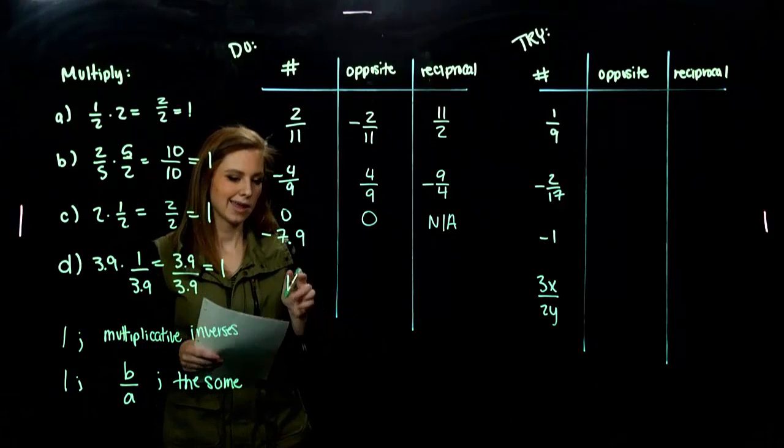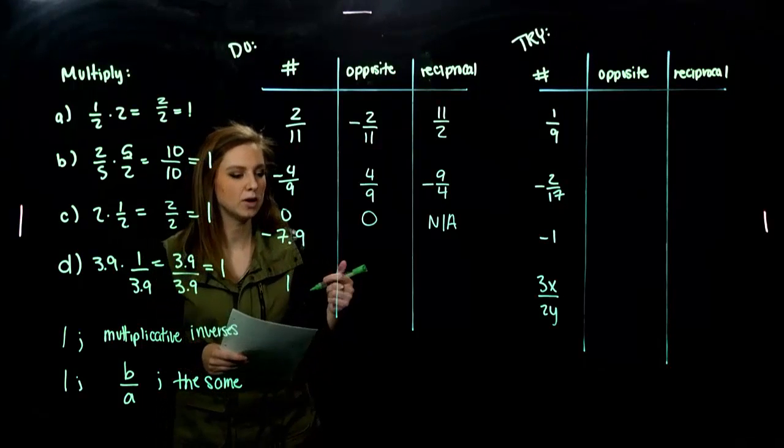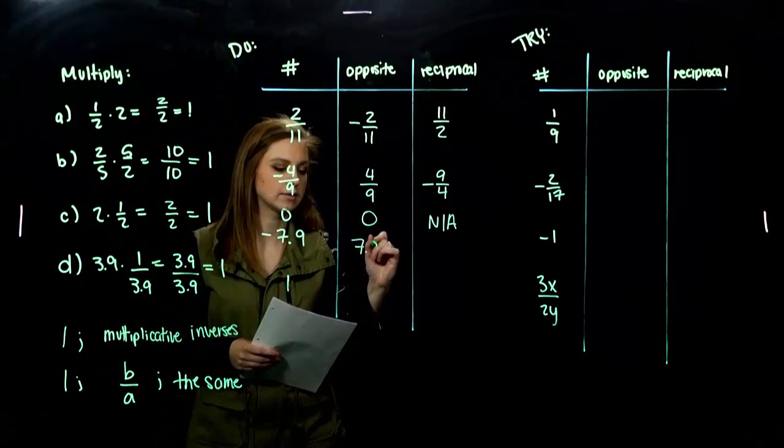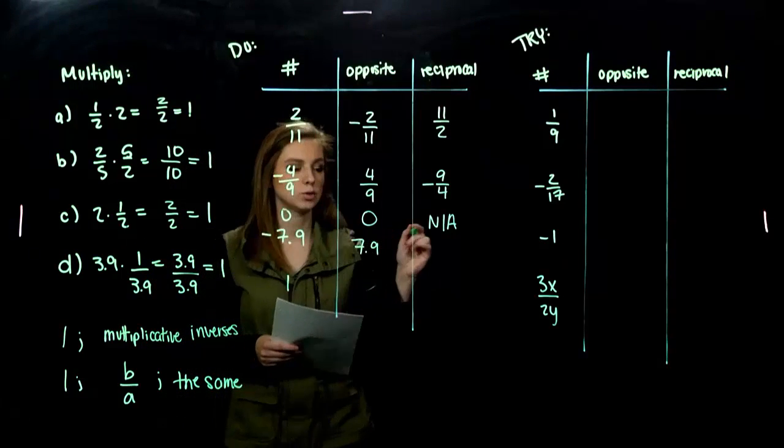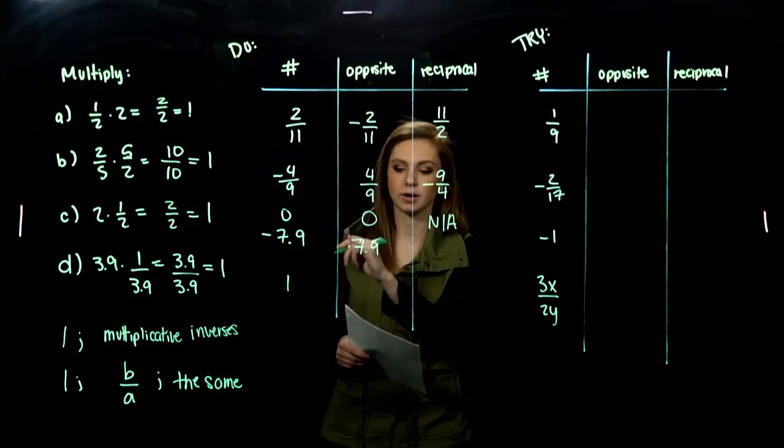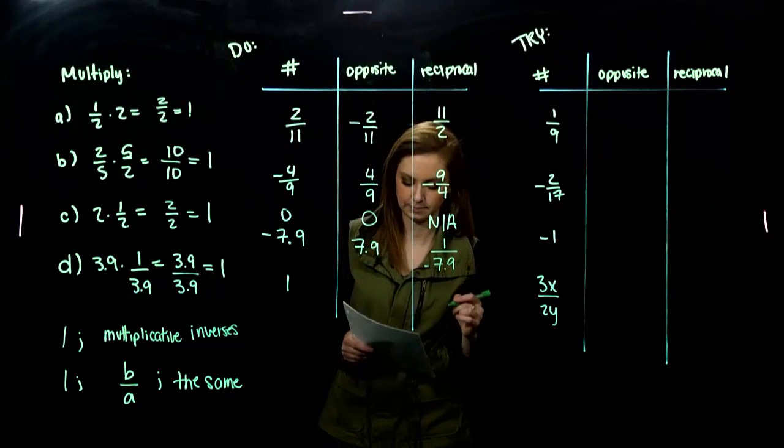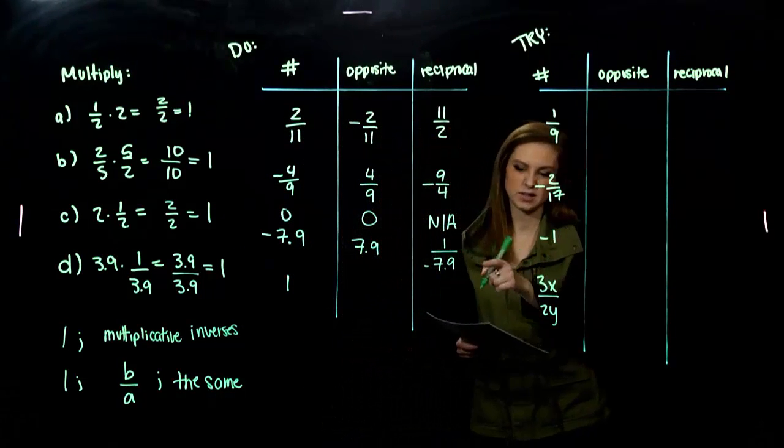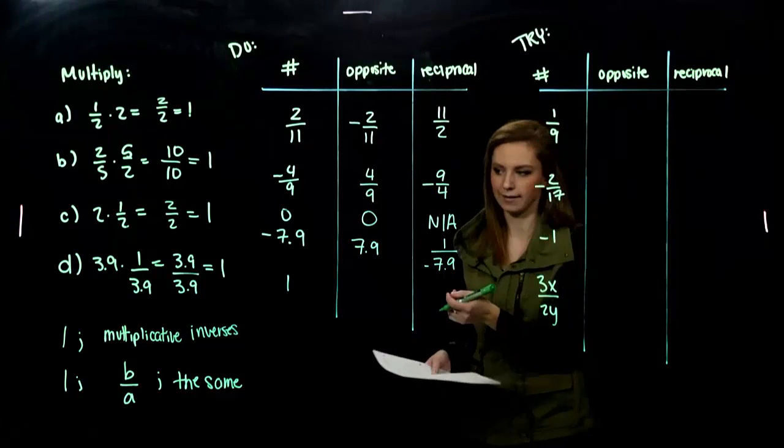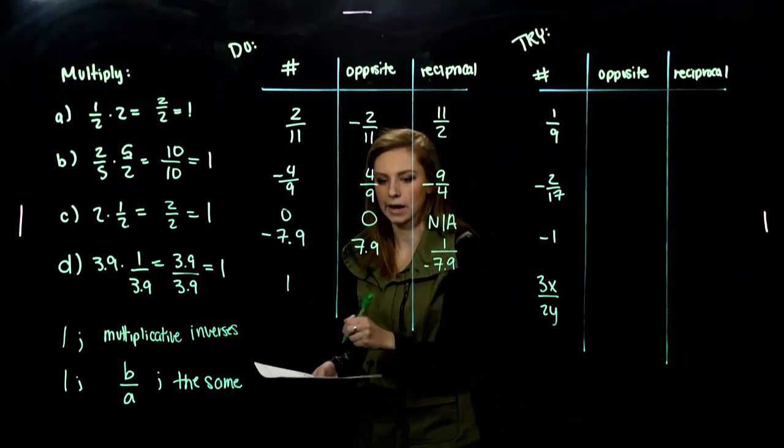What about a decimal? Negative 7.9. Its opposite is positive. And, its reciprocal, again, of the original number, not of the opposite, is 1 over that negative 7.9. And, we could simplify what it actually is, but you get the idea. If I multiply them together, I get out positive 1.